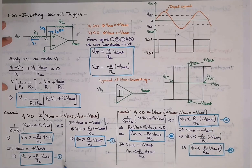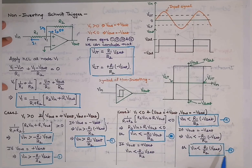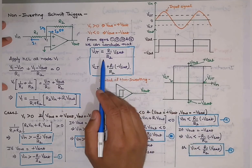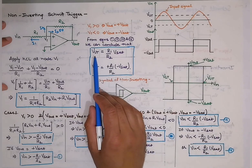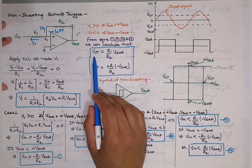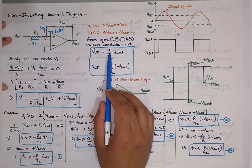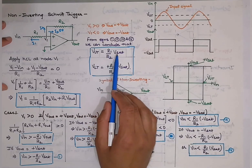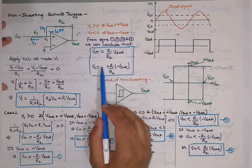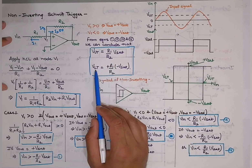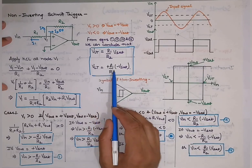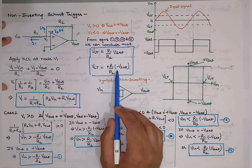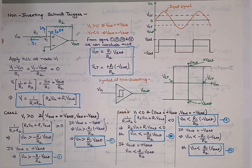From equations 1, 2, 3, and 4, we conclude there are two threshold levels: the upper threshold is (R1/R2)·Vsat and the lower threshold is (R1/R2)·(−Vsat).